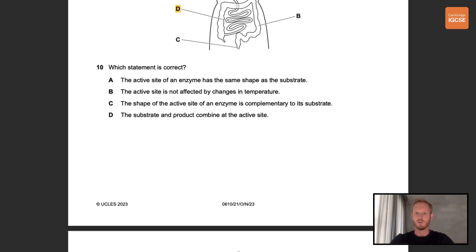Number 10. Which statement is correct? The correct statement here is C. The shape of the active site of an enzyme is complementary to its substrate. This of course allows the enzyme to bind to its substrate forming an enzyme substrate complex.